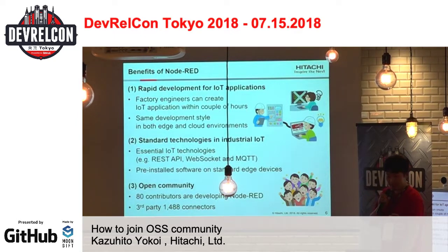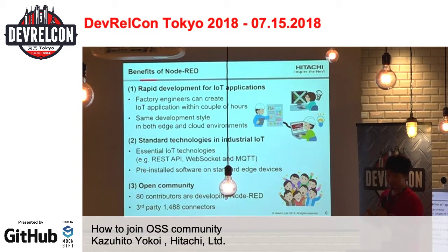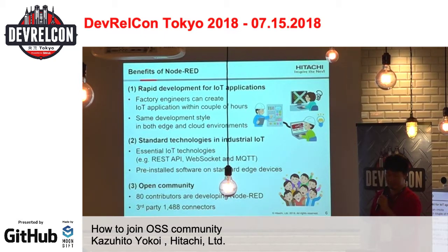The next slide is the benefit of Node-RED. There are three reasons why I recommend Node-RED. First is rapid development for IoT applications. Using Node-RED, factory engineers can easily create their application within a couple of hours. And the same development style in both cloud and edge is important because IoT applications tend to be used in both environments. And secondly, standard technologies in industrial IoT. Node-RED has essential IoT technologies like REST API, WebSocket, and MQTT protocols. And a lot of standard edge devices come with Node-RED pre-installed for the development environment.